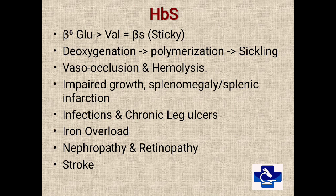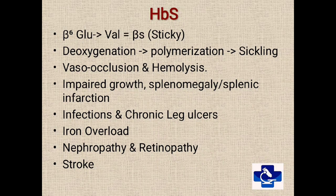Coming to HbS, that is sickle hemoglobin — the pathology lies in the beta-6 position of the hemoglobin chain, where glutamic acid is replaced by valine, which becomes sticky. In tissues, during deoxygenation, there is polymerization of the hemoglobin, which leads to sickling of the RBCs.